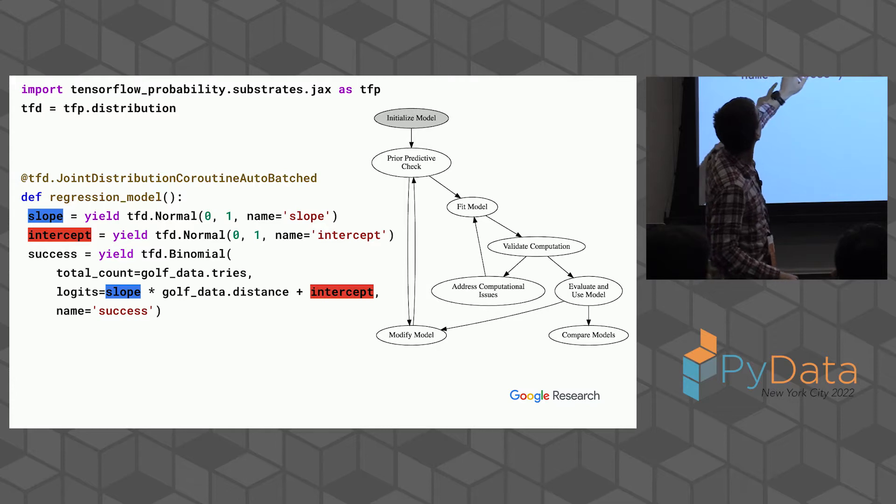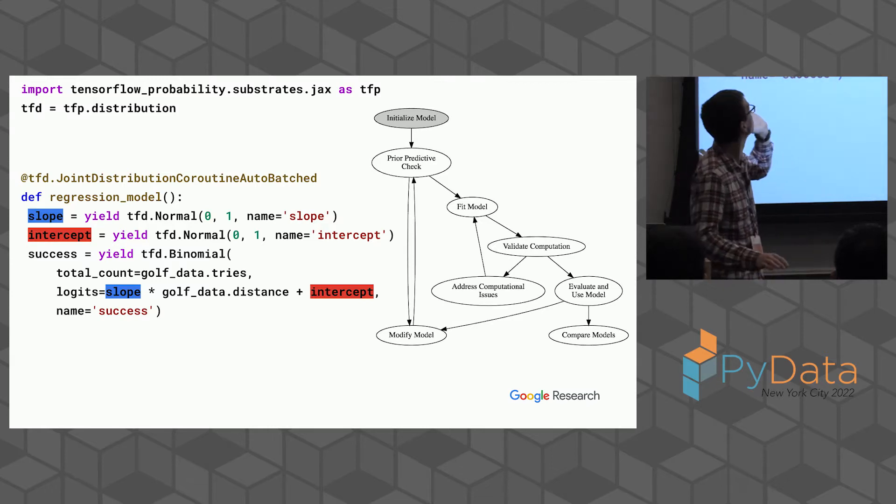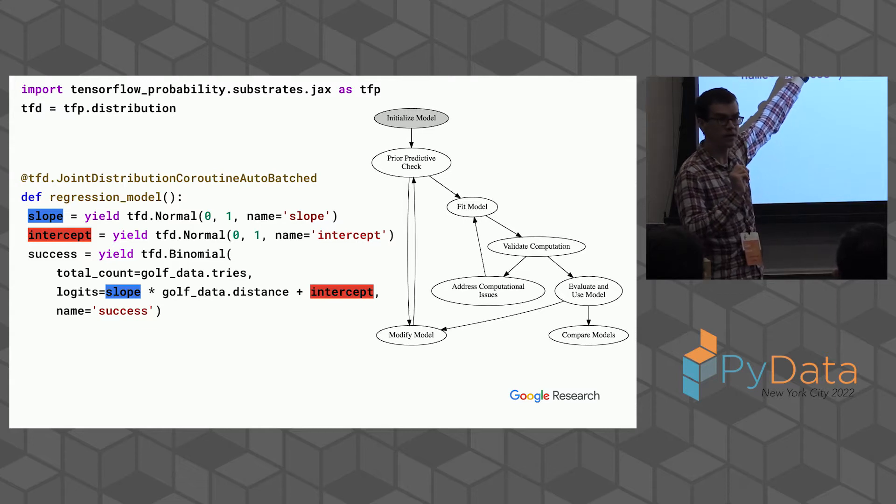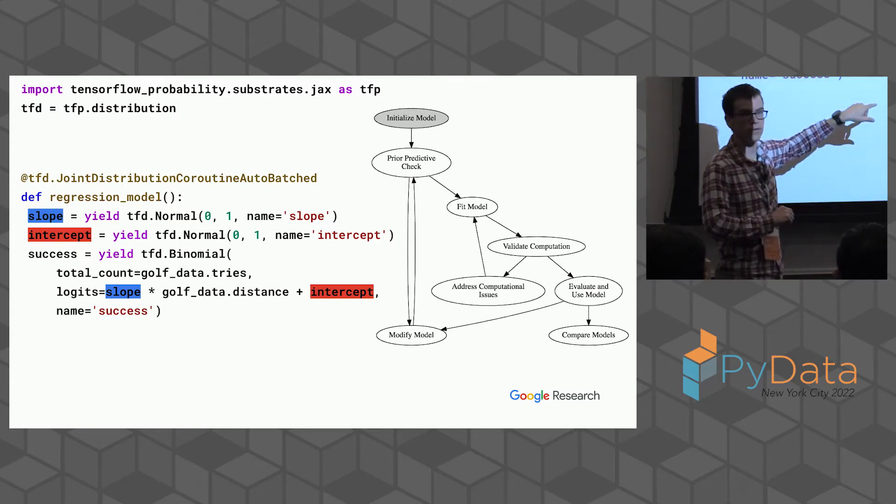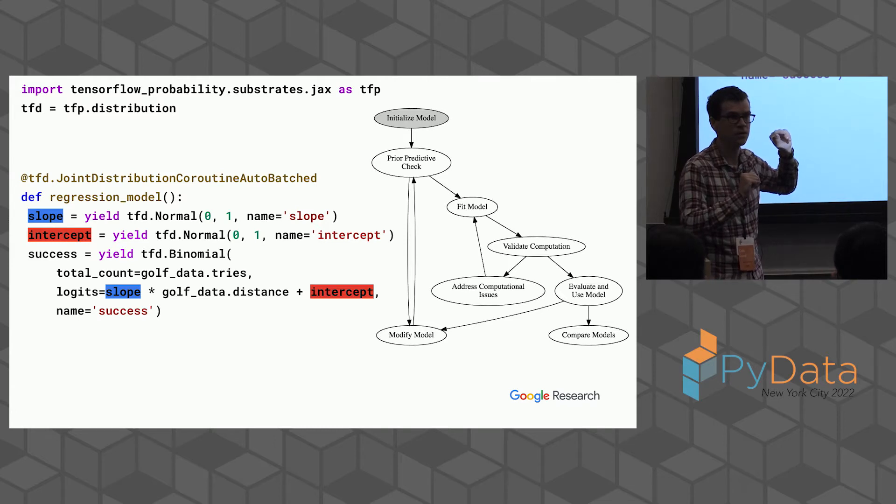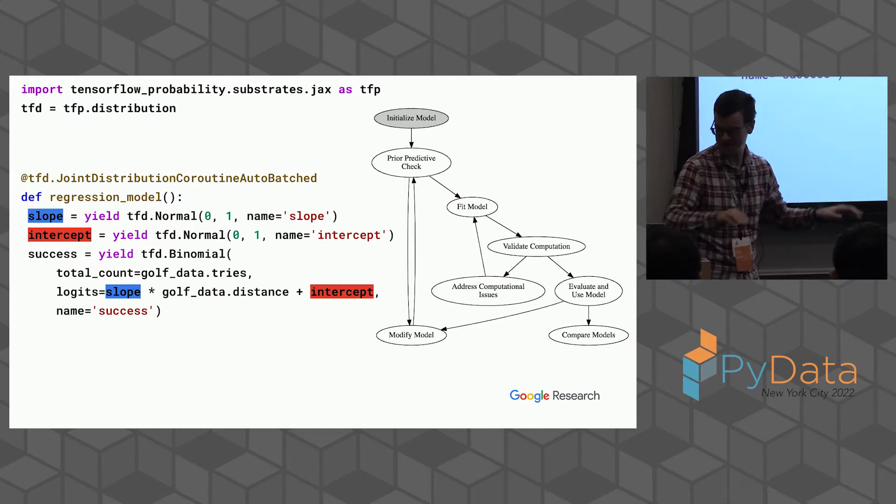So I wrote down the model and there's a decorator up there. They're hard to get your mind around, but they eat functions and give you back new functions. The thing that this gives you back is actually a class with two methods: sample and log probability. You can call sample on it and it'll give you samples from these parameters, or you can pass values for those parameters back in and it'll compute the log probability.